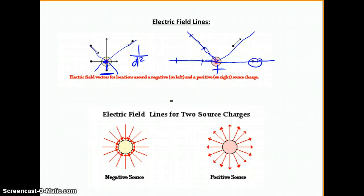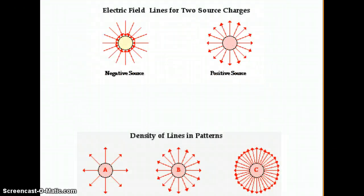So, the basic field pattern for a negative source, the field lines, the pictures that we draw. You can see these are all the arrows. So, the arrows on the direction of the field for a negative charge is always going to be into that particular charge.